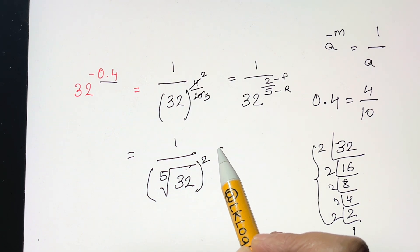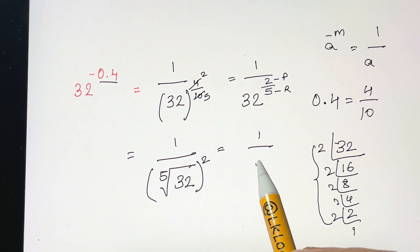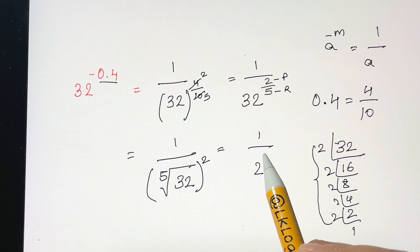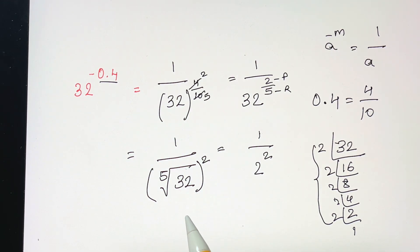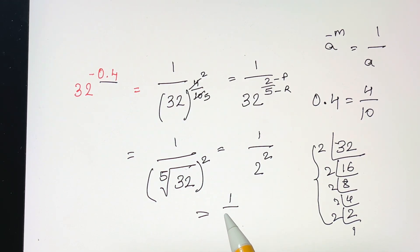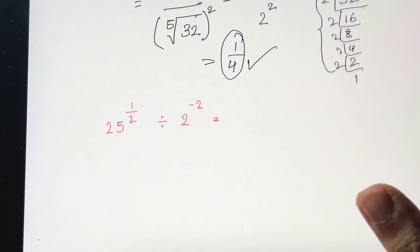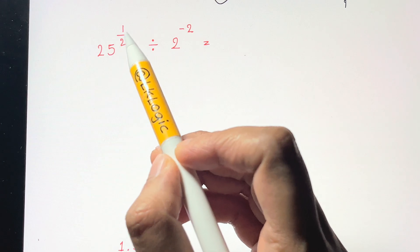So we have 1 over 2 to the power of 2. 2 squared is 4, so the answer is 1/4.